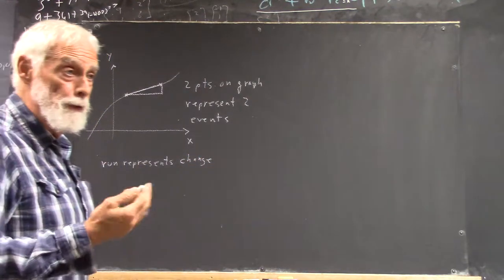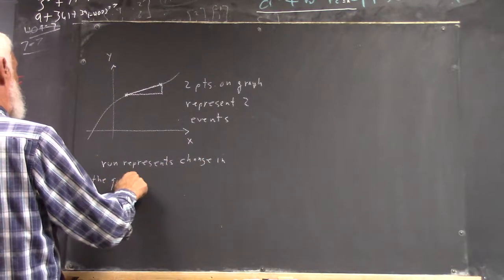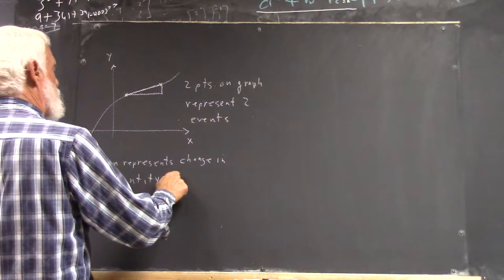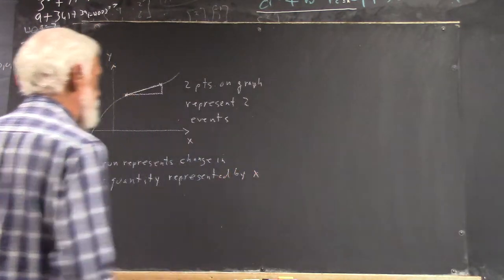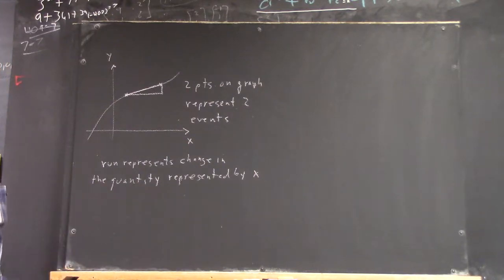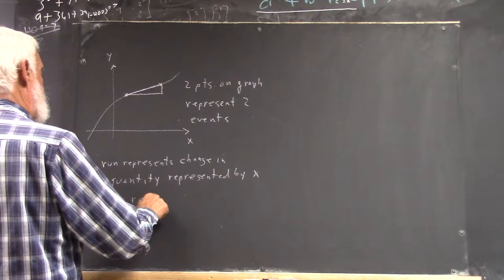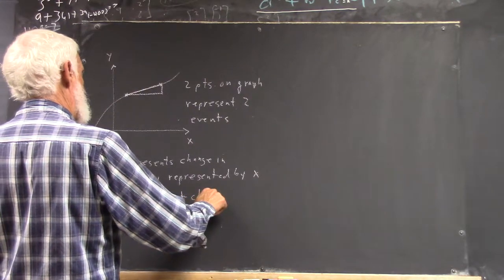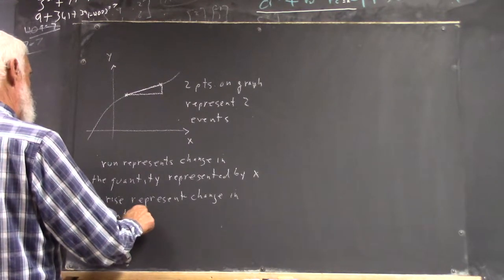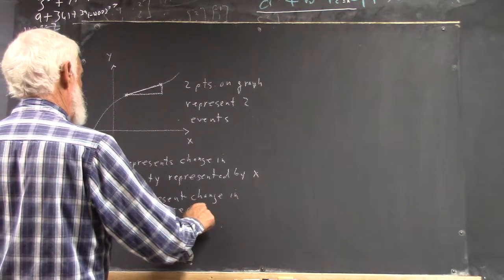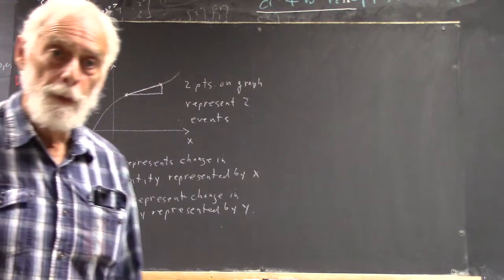I'm going to say it just a little differently to expand the vocabulary a little bit. The run represents a change in the quantity represented by x. The rise represents the change in the quantity represented by y.